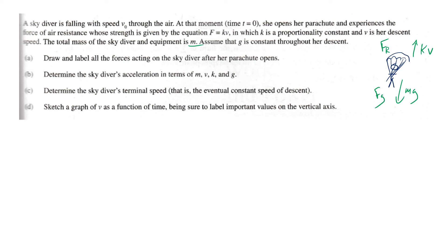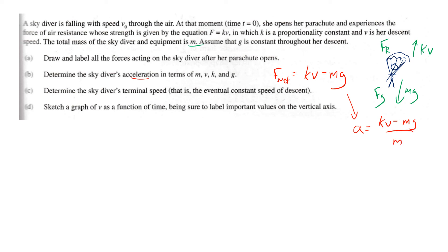To find her acceleration, take the net force. Let up be positive: net force equals kv minus mg. Dividing by m gives acceleration equals (kv minus mg) over m. You could simplify that slightly.